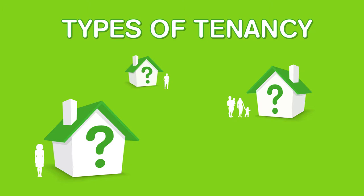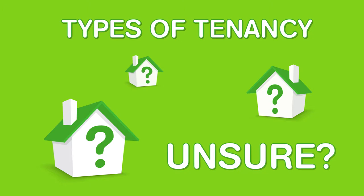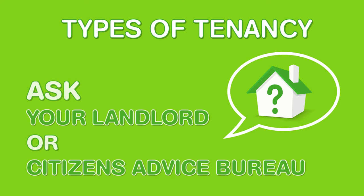It is important you know which type of tenancy you have, as this can affect your rights as a tenant and the way the landlord can end your tenancy. If you are unsure which type of tenancy you have or would like more information, you can ask your landlord or speak to your local Citizens Advice Bureau. The types of tenancy you may have depends on whether you are in private or social housing. The way the landlord can end your tenancy is different for each type of tenancy.